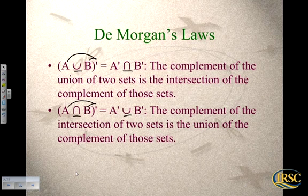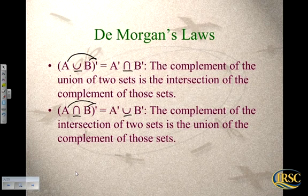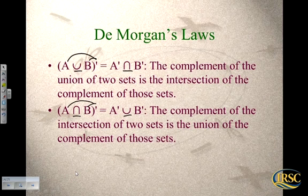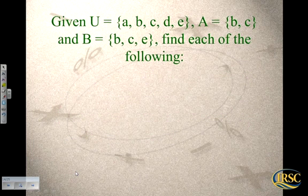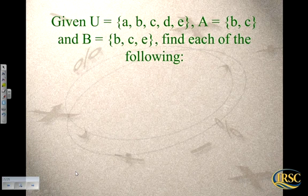DeMorgan's Law is helpful because maybe you already know what the complements are equal to, and you can rearrange your operations to take the union or intersection as needed. If you don't know the complements, it's probably easier to leave it in parentheses and find your answer that way. We're going to prove these two equations are true. The space on your handout — if you want to cut that into four columns, we'll do four problems in that section.